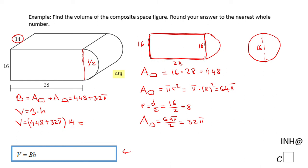And I end up with 7,679.4, and because I need to round this to the nearest whole number, I'm going to round it to 7,679 cubic units.